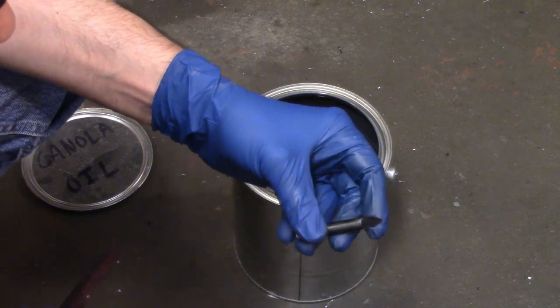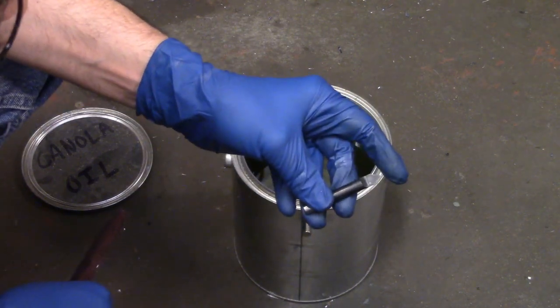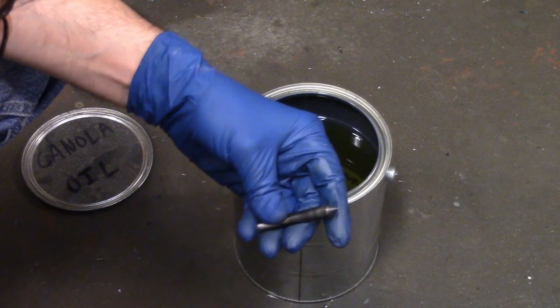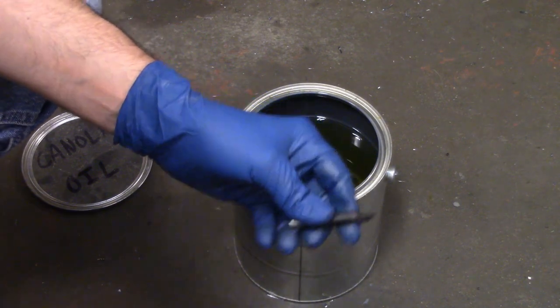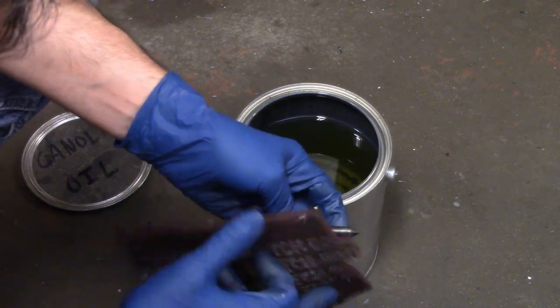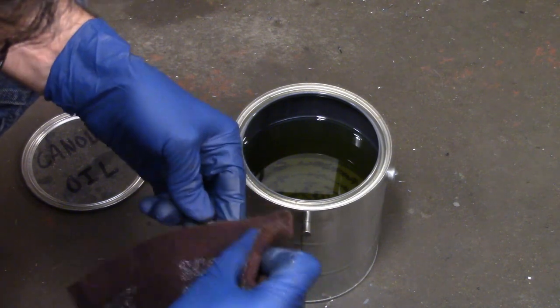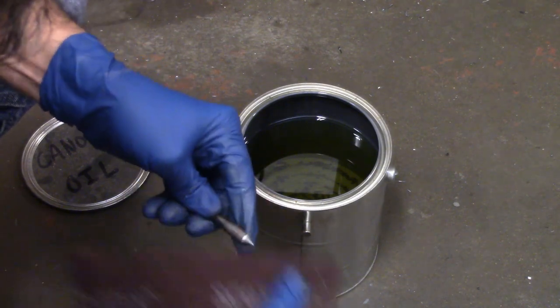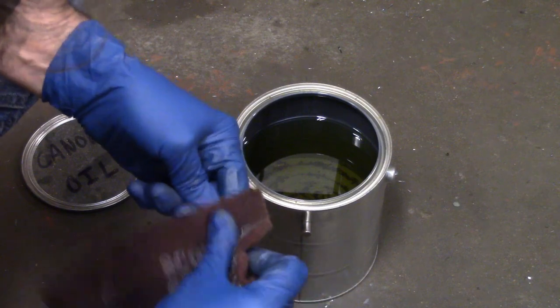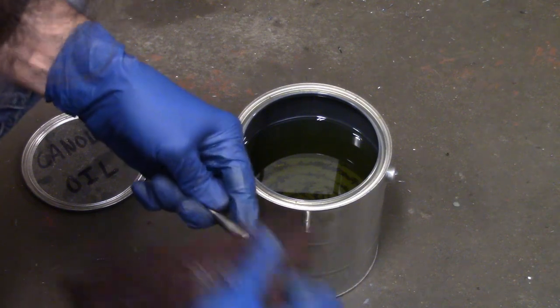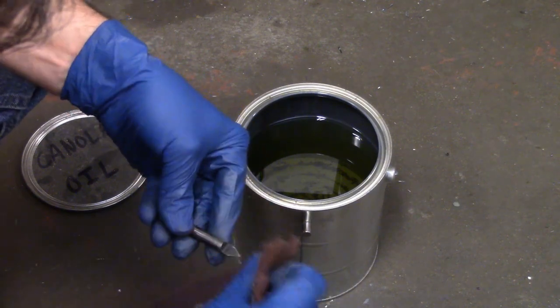This is now glass hard. This is straight from the flame into the oil. I'm going to do a couple of things. First of all, I'm going to clean off the scale, and I'm just going to use a piece of Scotch-Brite for that. And that way, when I heat this back up, I'll be able to see the temper colors.